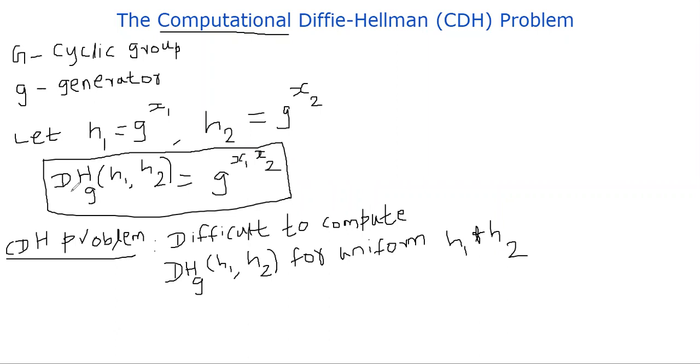So let's define a function DH(h1, h2) as follows. DH of h1, h2 is nothing but g power x1 x2. This is the DH function.